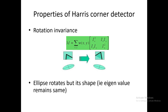Let's start with rotation. If we have an image with a small corner and we rotate it, how would the Harris operator respond? We discussed about the formation of an ellipse from the moment matrix of gradients in our previous class. The ellipse will rotate with the rotation of the corner, but it will be the same ellipse because the variation of gradients would be the same over the window. The ellipse rotates but its eigenvalues remain the same.